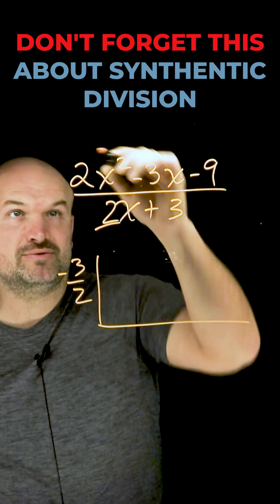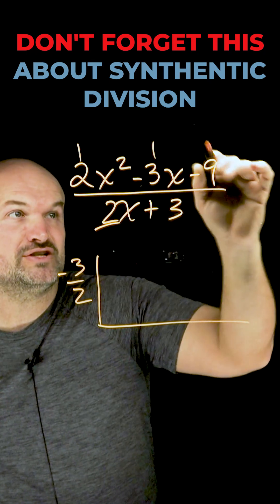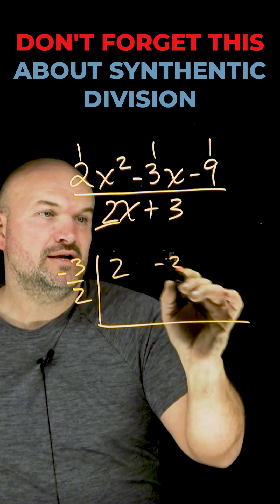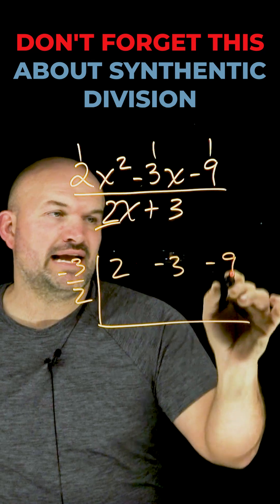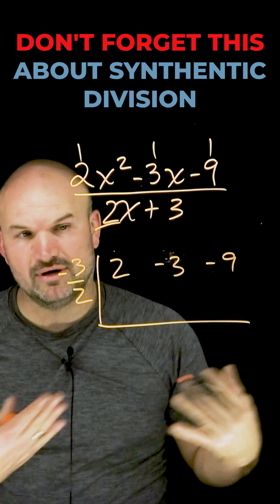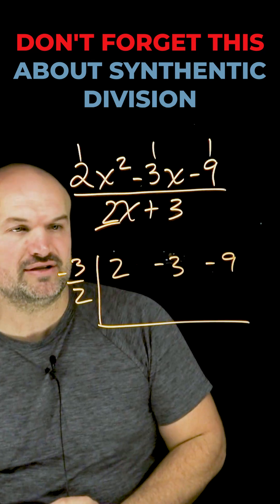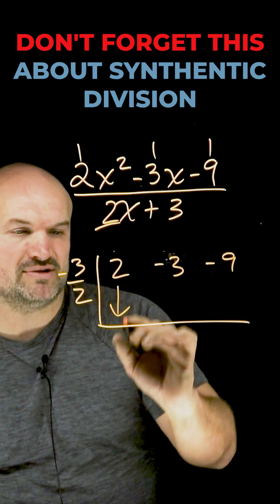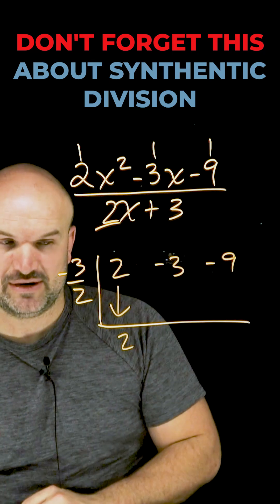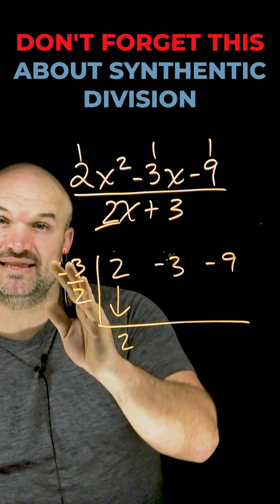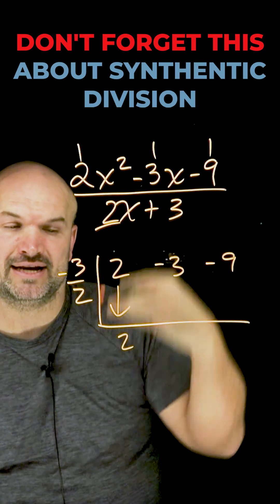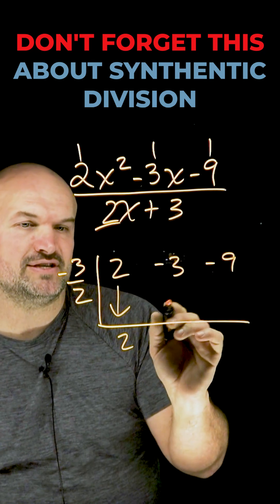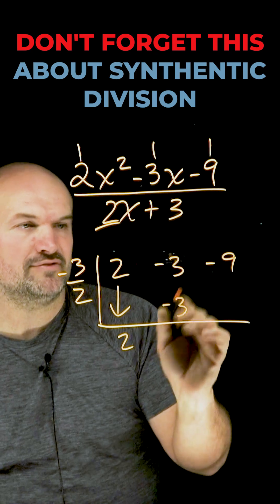Then what we're simply going to do is take the coefficients of our dividend: 2, negative 3, negative 9. Now apply the synthetic division algorithm. The first number always comes down — that's a freebie. Multiply on the diagonal, add on the vertical. 2 times negative 3 halves is going to be negative 3.